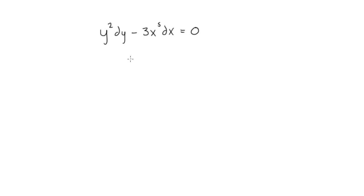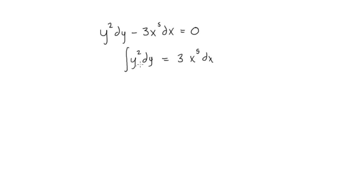Let's rewrite this: y squared dy equals positive 3x to the fifth dx. Now all we need to do is integrate both sides — integrate the left with respect to y and integrate the right with respect to x. We can pull the 3 out front as a constant.